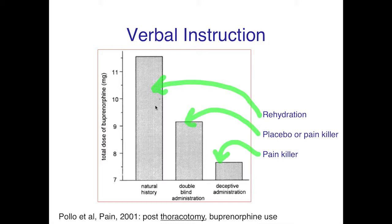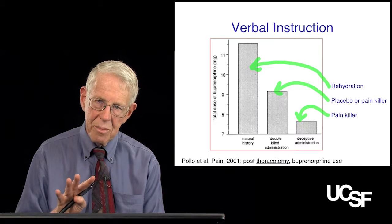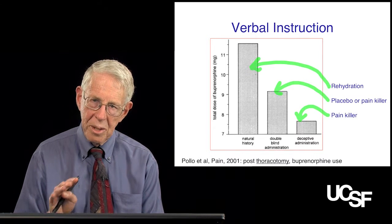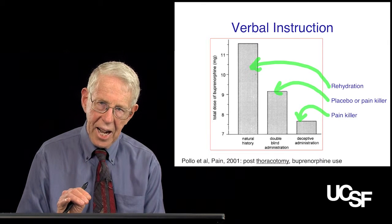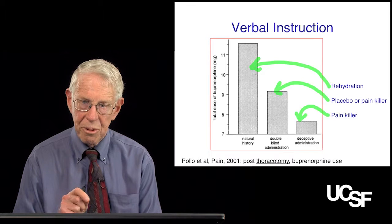The group that thought they were in a double-blind study and might get a pain reliever required an intermediate dose of buprenorphine. Whereas those who were told they were getting a powerful pain reliever had very little need for rescue medication. This tells you that with the same type of severe pain, the amount of pain relief obtained from suggestion depended very much on exactly what the patients were told.